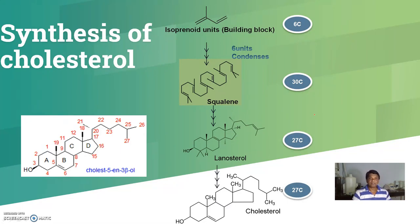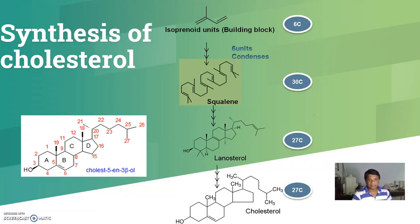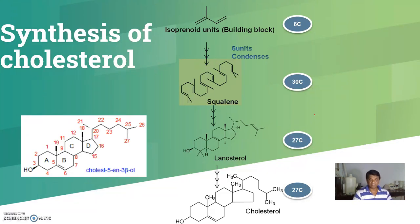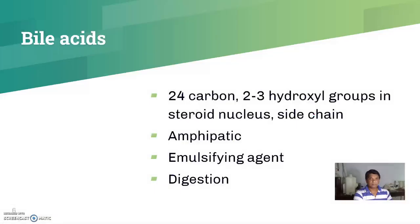From mevalonate, isoprenoid units are formed, and nearly six isoprenoid units condense to form squalene. Squalene is the basic molecule where the shape of cholesterol starts taking place. From squalene, lanosterol is prepared, and from lanosterol, 7-dehydrocholesterol is synthesized, from which cholesterol is finally produced.